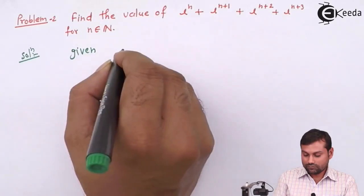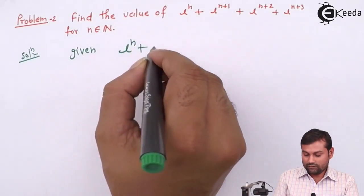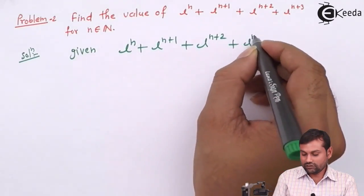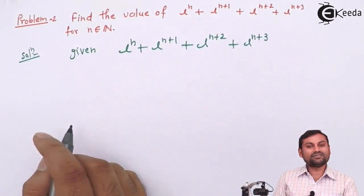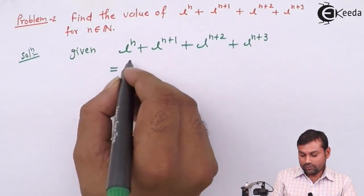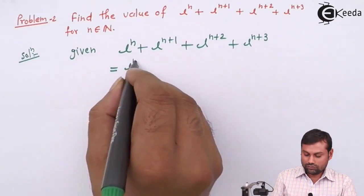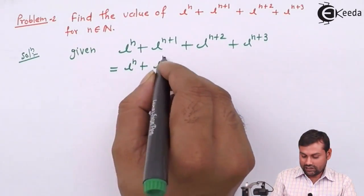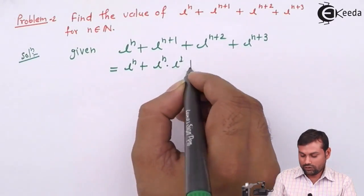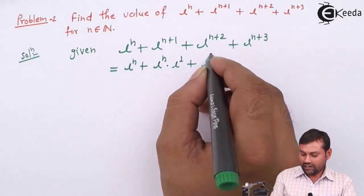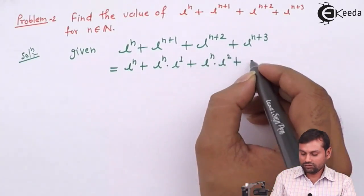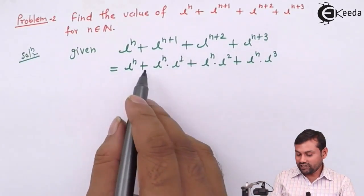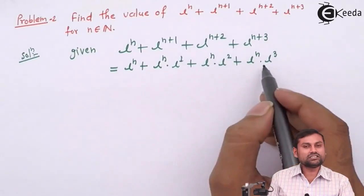Given: i^n + i^(n+1) + i^(n+2) + i^(n+3). We can rewrite each term by factoring: i^n · 1, then i^n · i^1, then i^n · i^2, then i^n · i^3. Now you can see i^n is common in all terms.